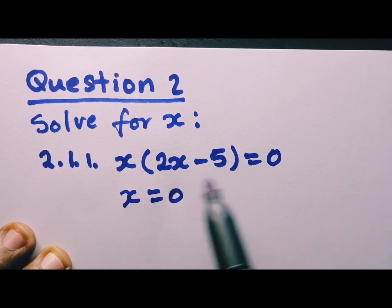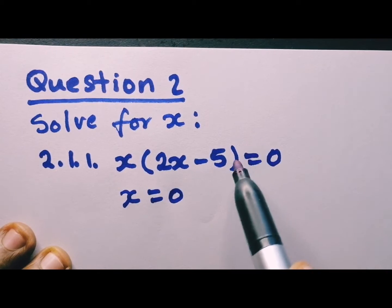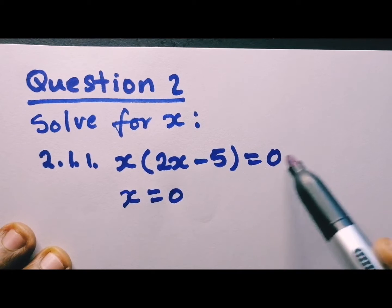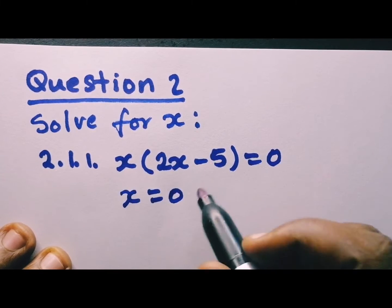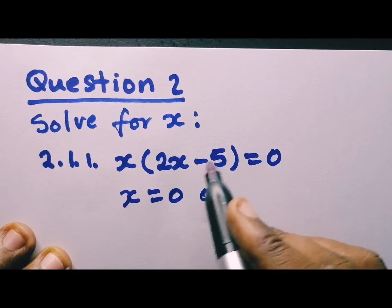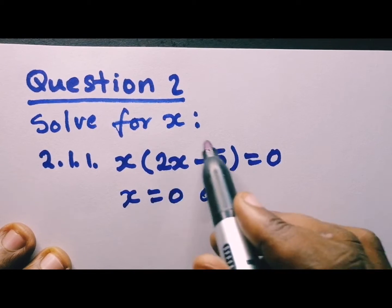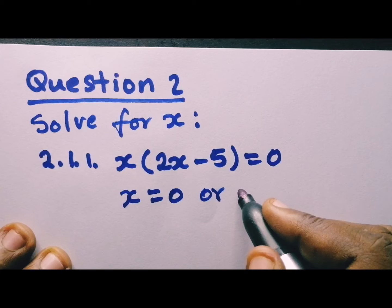Only if it's in this nature where there's nothing added, there's nothing subtracted, and this is equal to 0. So you say x is equal to 0, or you say what is inside the bracket is equal to 0. That's what you do.